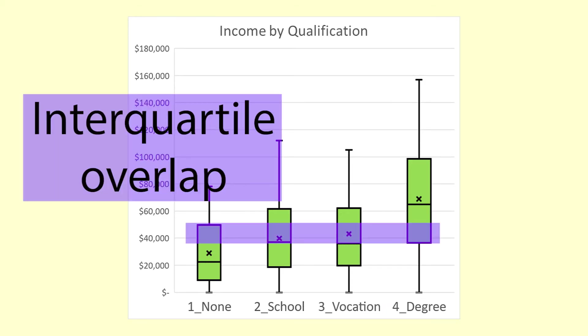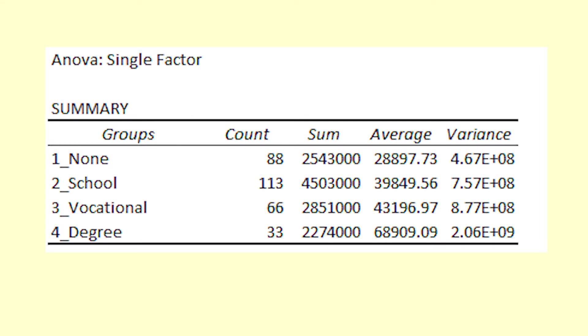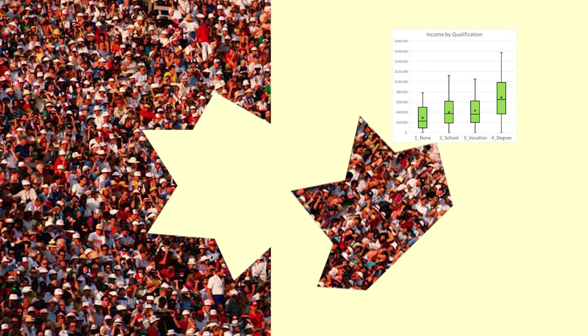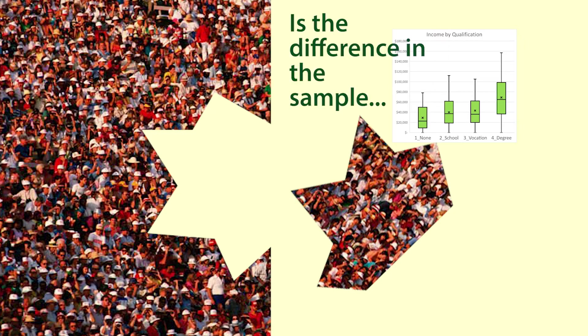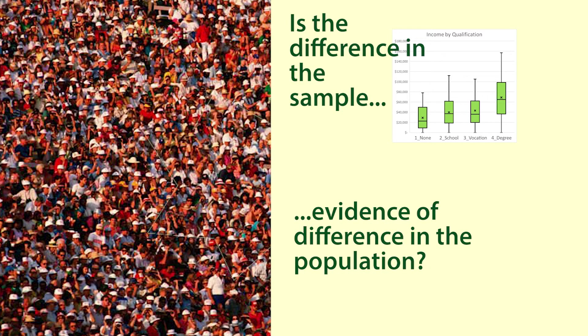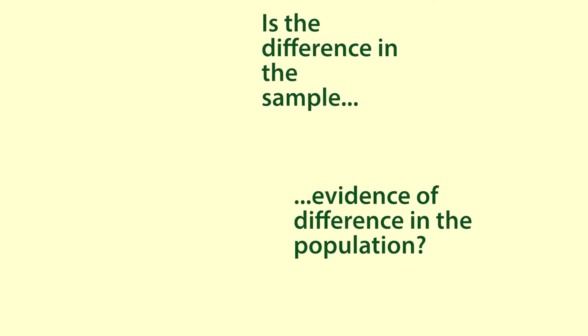The respective sample means are shown in the table. These are all different values. We want to find out if this difference in the sample is evidence of difference in the population from which the sample is drawn.